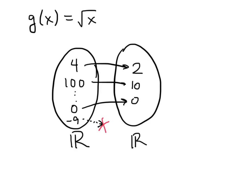Again, we could just say this isn't a function, but it's so close. If we throw away the numbers from the domain that cause these problems — the numbers with no arrows coming out of them — then this really would be a function. The numbers we have to throw away are the negative numbers. So the domain is all numbers x such that x ≥ 0.